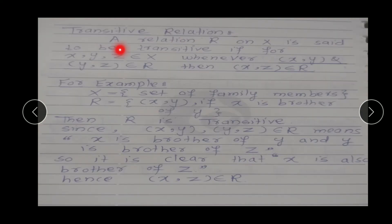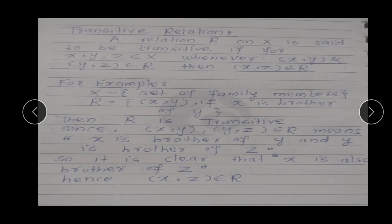Transitive relation: A relation R on X is said to be transitive if, for x, y, z belonging to X, whenever (x, y) and (y, z) both belong to R, then (x, z) also belongs to R. अगर यहाँ पर x related रहेगा y से and y related रहेगा z से, तो यहाँ पर हमें मिलेगा x is also related to z — then we say that a relation is a transitive relation.